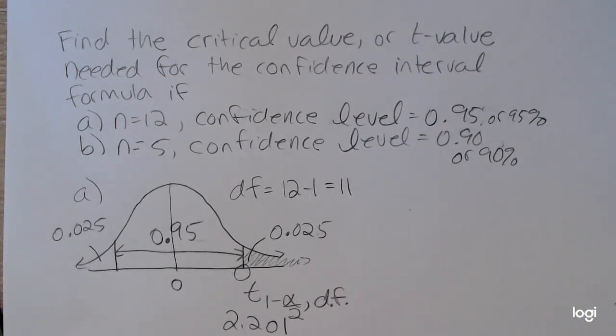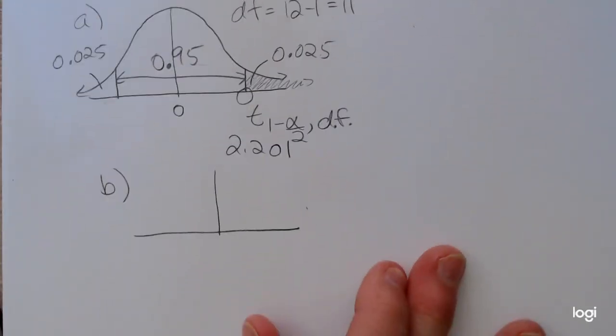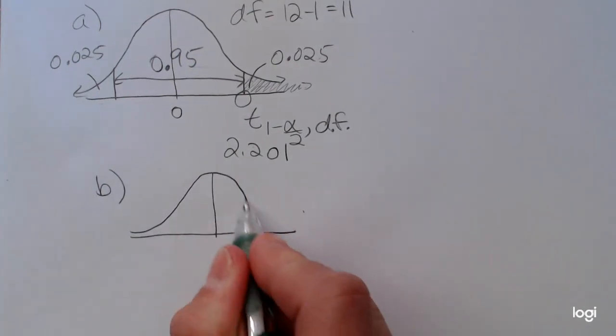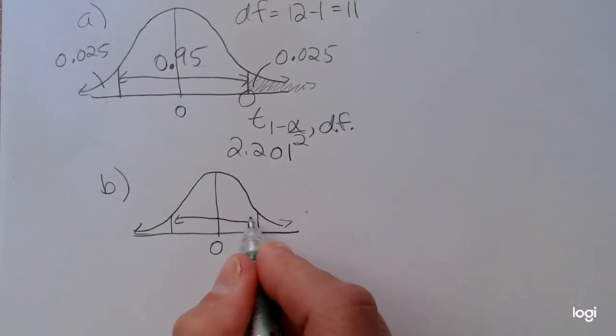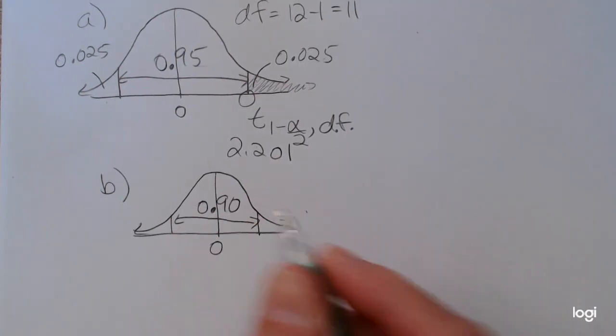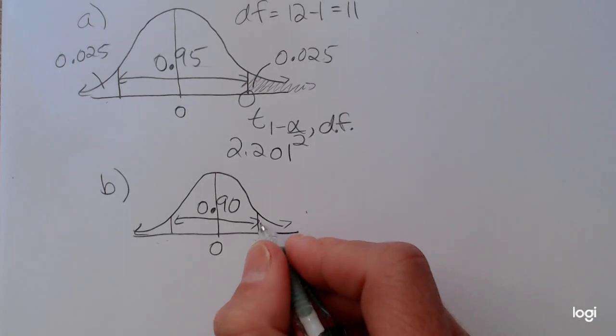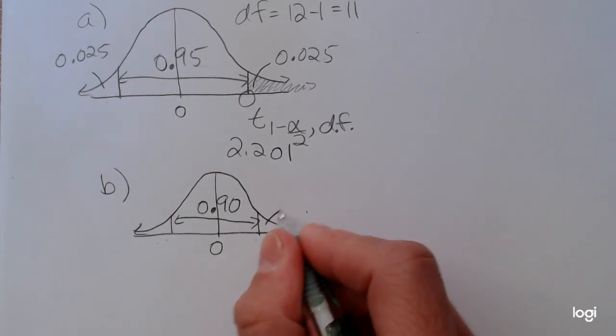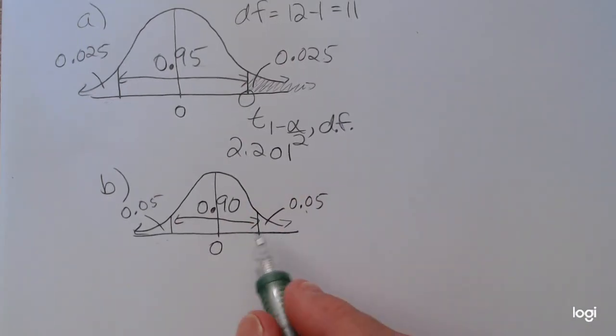For my second one, I have a confidence level of 0.9, or I'm finding a 90% confidence interval. Again, putting 0 in the middle, and partitioning the area under the bell curve, under the t distribution, such that I have 90% between two symmetric t values. So this means that this tail here would have 0.05 amount of area, and this tail would have 0.05 amount of area. So this tells me how much area I have to the right of this mystery critical value.